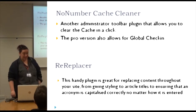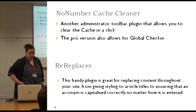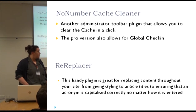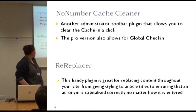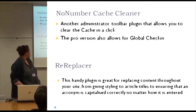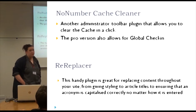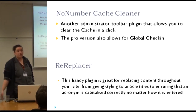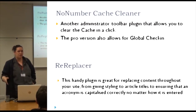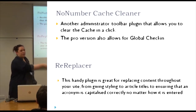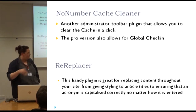No Number Cache Cleaner is another administrator toolbar button that allows you to clear your cache in one click, which saves you having to drill down and find it. The pro version also allows for global check-in in one click. Really handy when you're spinning out sites or adding new content with caching — you can clear the cache and check it in the front end, and you can stay where you are without having to come out of whatever you're doing.